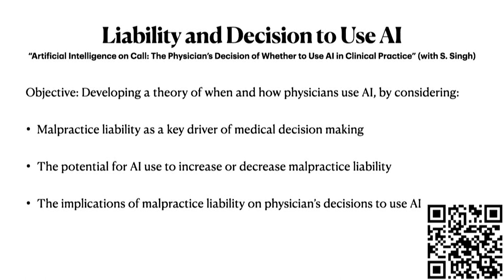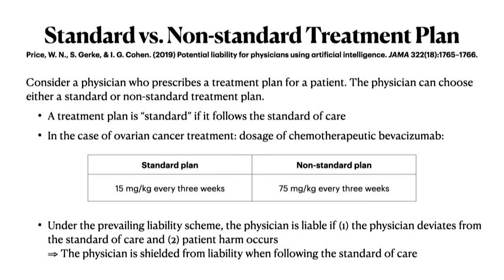This JAMA 2019 case study looks at a physician prescribing treatment for ovarian cancer. The physician chooses either a standard plan — 15 mg/kg body weight every three weeks — or a non-standard, more aggressive plan at 75 mg/kg, five times the standard. Under the current liability scheme, the physician is liable only if they deviate from the standard of care and the patient outcome is bad. The current standard of care is very conservative, so physicians are shielded from liability if they follow it.